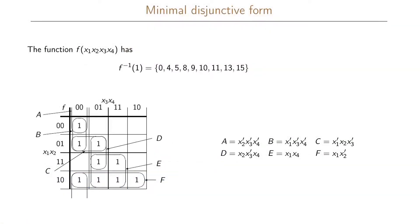In this example we were given the onset of a function. We wrote the onset in our Karnaugh map and then we found all the prime implicants, which we labeled a, b, c, d, e, and f. We found that e and f are essential, and then in order to cover the last three remaining minterms we could use either a with c, b with c, or b with d.